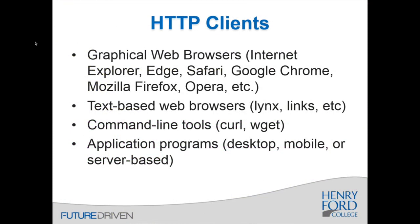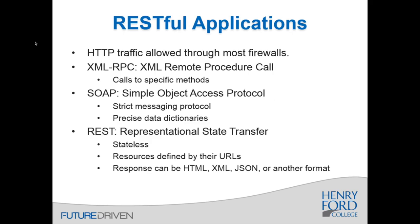Curl and wget are command-line tools where you specify the URL on the command line and get an answer back. You'll see some screenshots of curl in a couple of minutes, as I use it to demonstrate things we'll cover in this lecture. Finally, applications — desktop, mobile, or server-based — can use HTTP to get information from a server. RESTful applications are pretty much the most common way that gets done today.